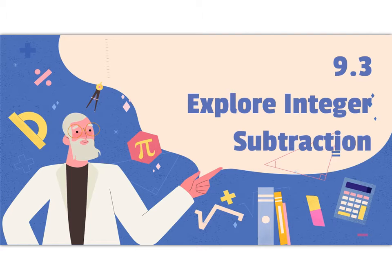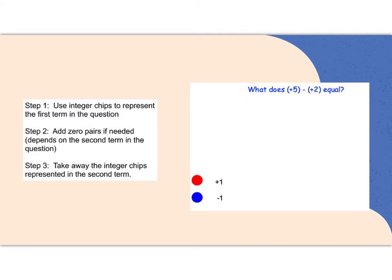This is a quick video about how to subtract integers using integer chips. If you have a question like this, you'll always want to tell me what colors you're using from the legend. In the textbook, red is always positive and blue is always negative.